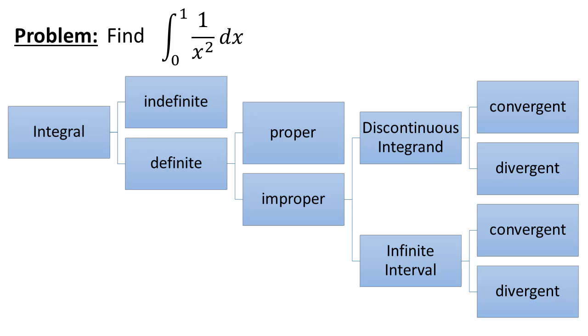So this is the hierarchy that we looked at in the previous video of types of integrals. In the previous video, we had this problem of e to the negative x evaluated from 0 to infinity, and this was an infinite interval type of improper definite integral. We found it was equal to 1 and found that it was convergent. Here, we're looking at a different type of improper integral, and we're going to call that discontinuous integrand.